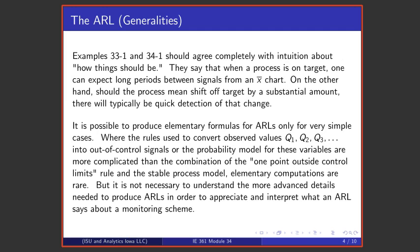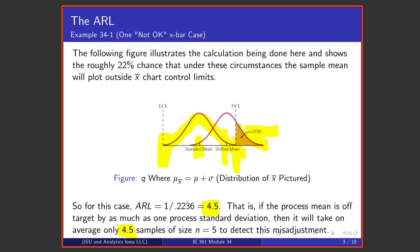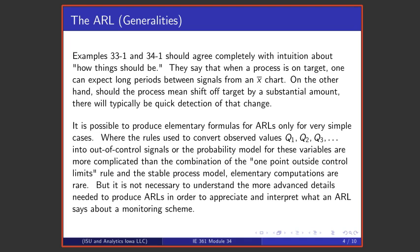These two examples really should agree with your intuition about how things should be. When mu and sigma stay at the values used to set the chart up, we won't get many false alarms. The ARL is about 370. On the other hand, when there's a pretty severe shift in where the process is located, x-bars will have their distribution shifted, and there's a substantial probability of getting an x-bar outside of control limits, and this geometric mean that's 1 over that probability is as small as 4.5.